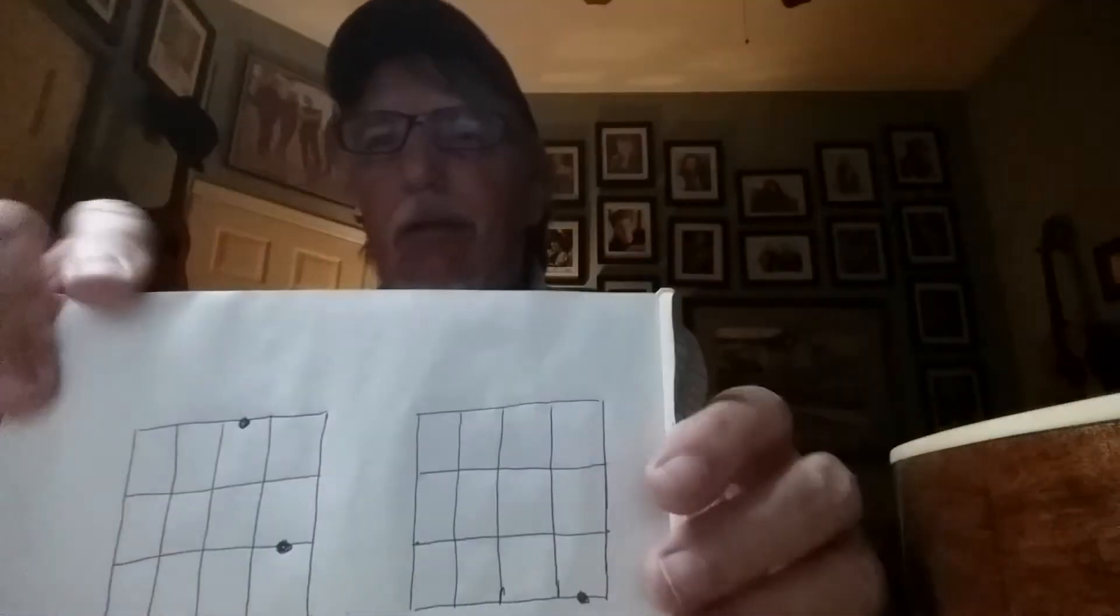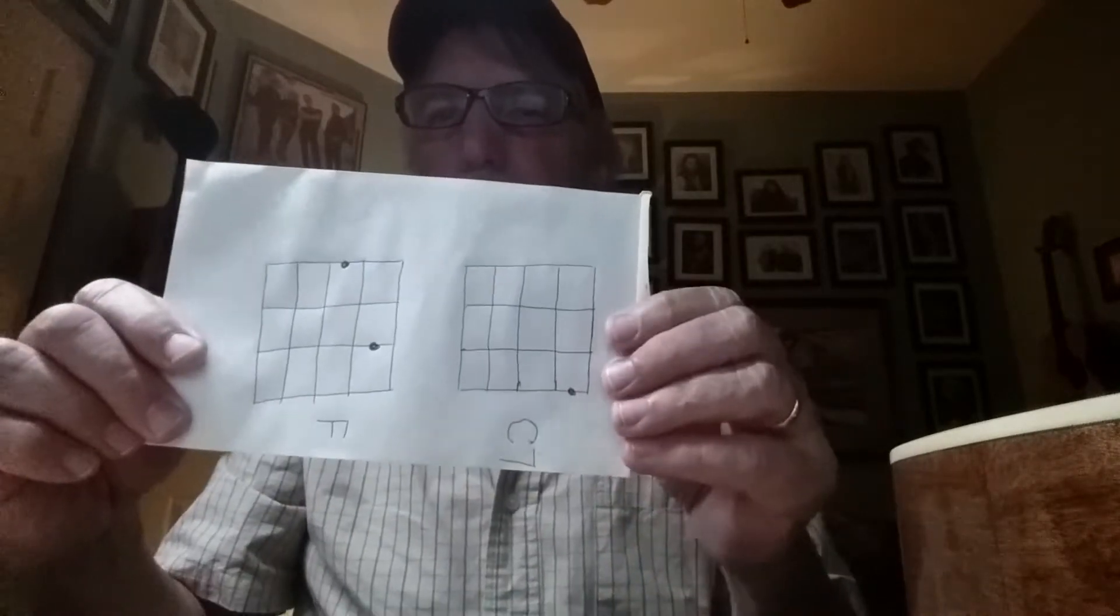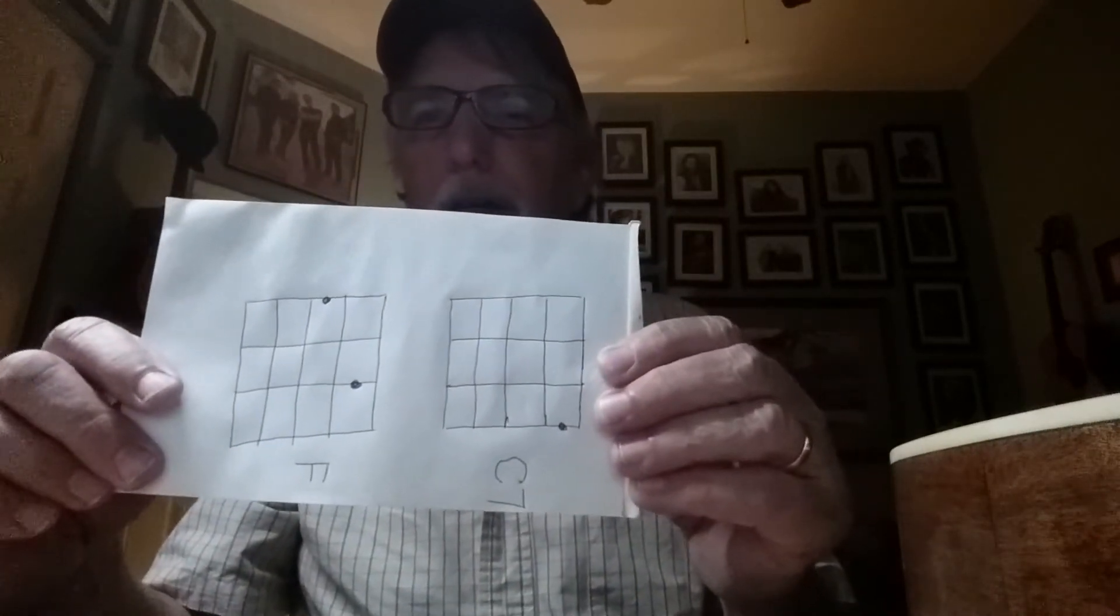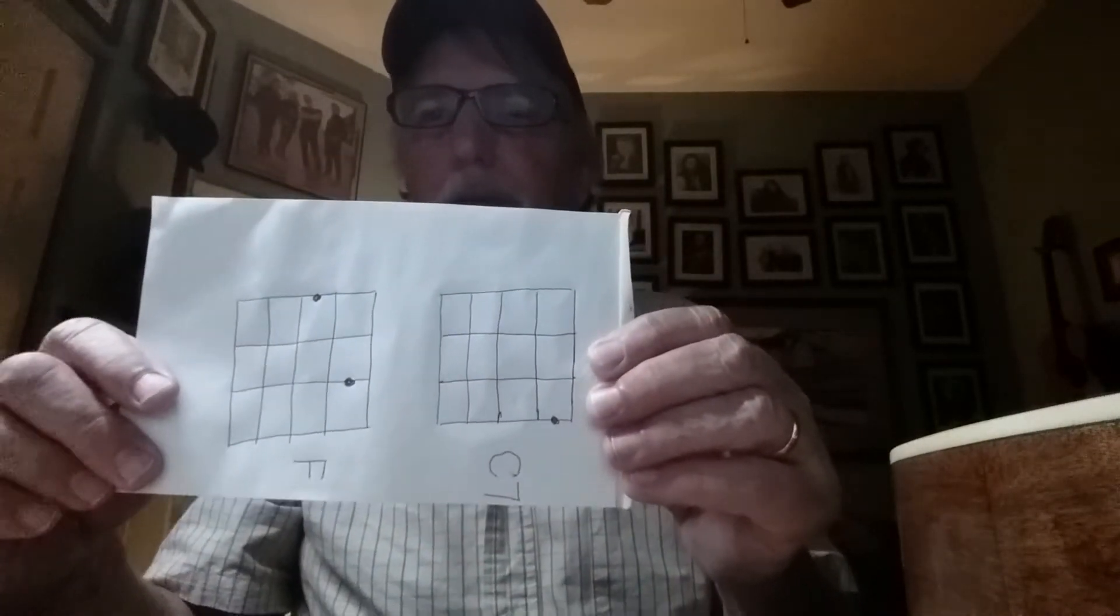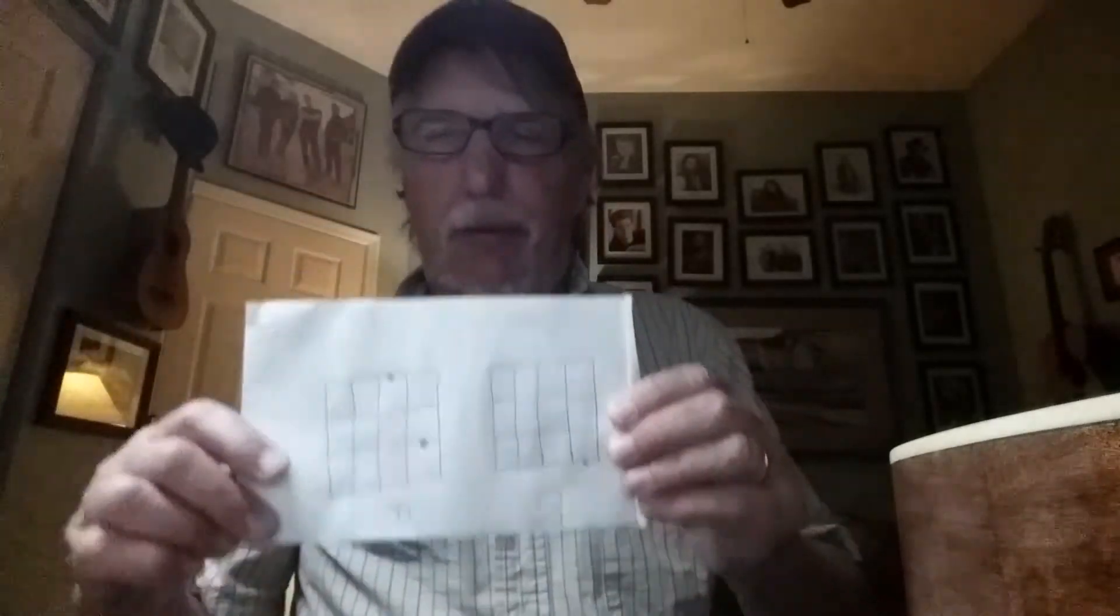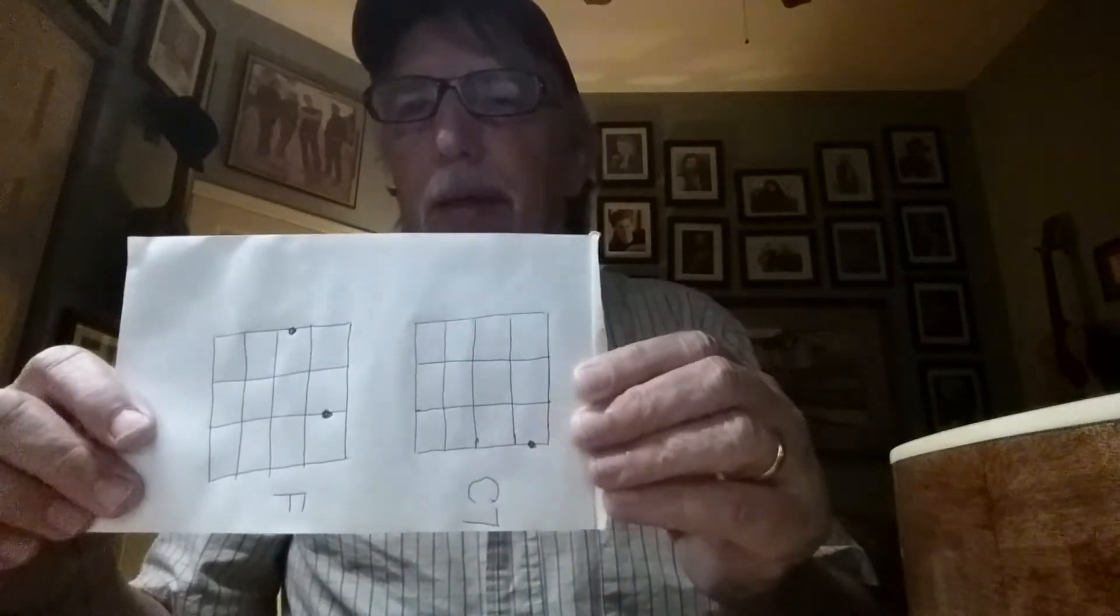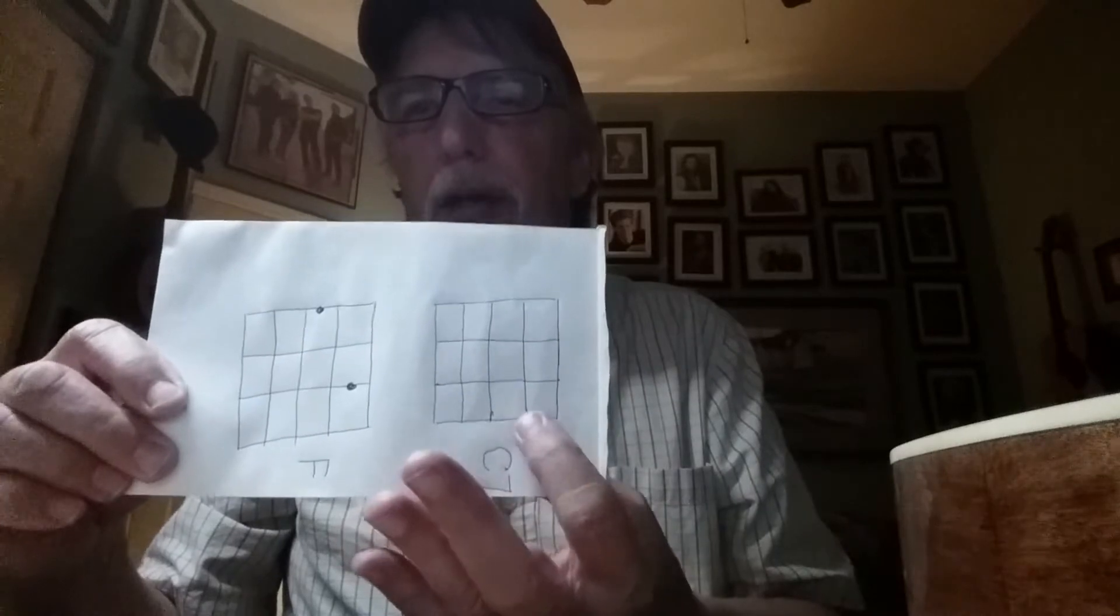Actually, an easier way to look at this I think is to turn it on its side like this, because now you're looking at the ukulele neck as it looks when you're looking down on it when you're playing it.